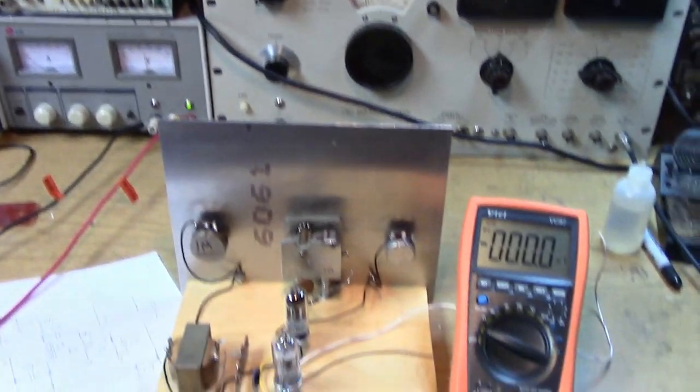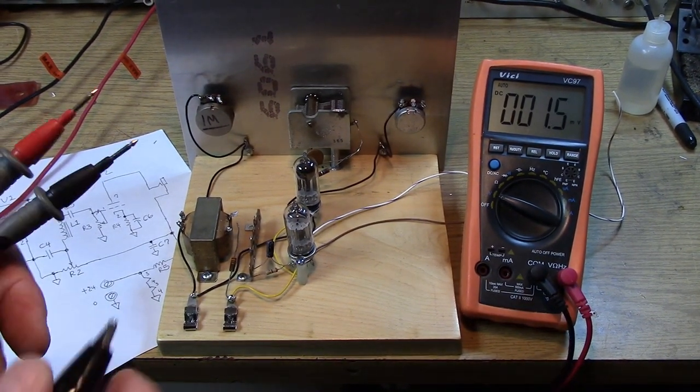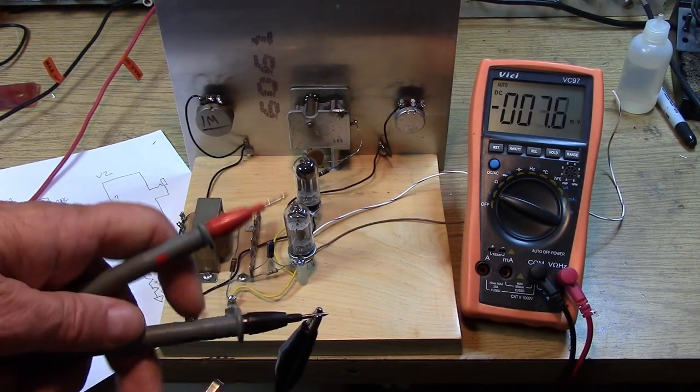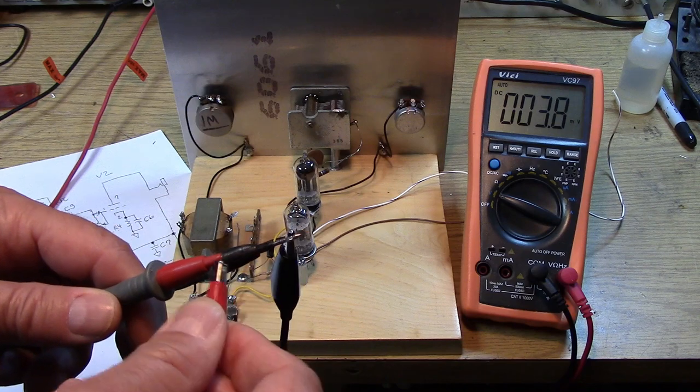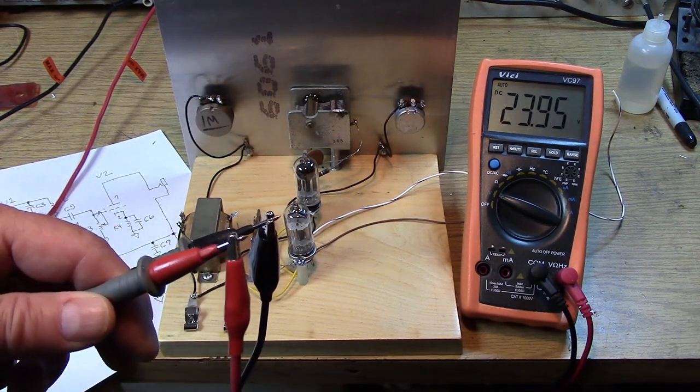So just because you've got 24 volts and 25 ohms doesn't mean that you're drawing an amp to light up those tubes. Next, we want to check the power supply. Let's see what we got for voltage. Hopefully, we've got 24 volts here. Let's take a look. Close enough. 23.95.